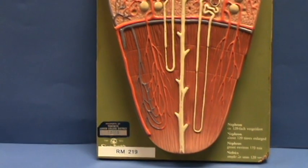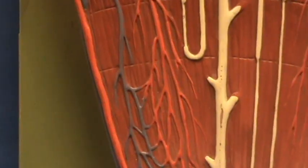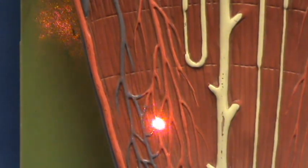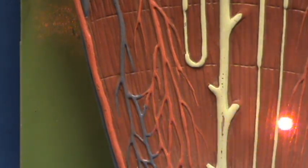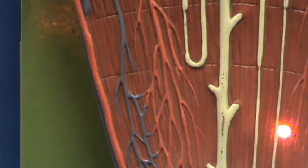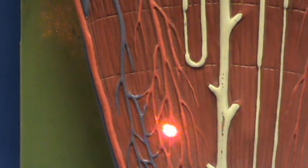If you look more closely at what's happening, you can see as the vasa recta vessels descend, they give off these capillaries, which are going to be going around the collecting ducts and the ascending and descending limbs of the loops of Henle.